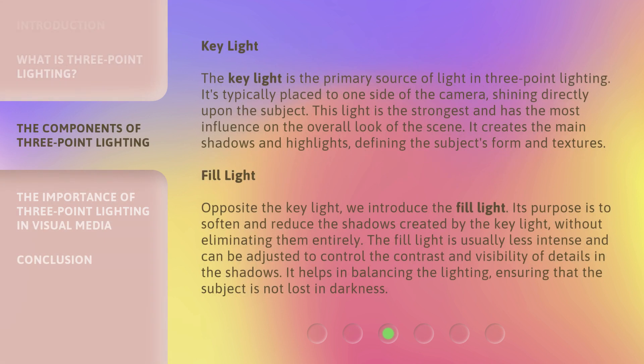The key light is the primary source of light in three-point lighting. It's typically placed to one side of the camera, shining directly upon the subject. This light is the strongest and has the most influence on the overall look of the scene. It creates the main shadows and highlights, defining the subject's form and textures.